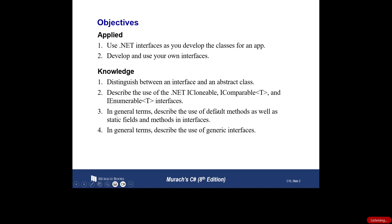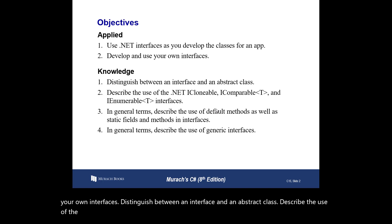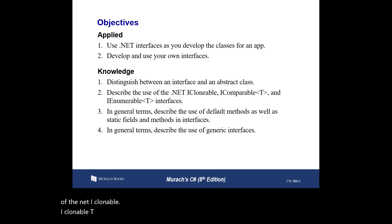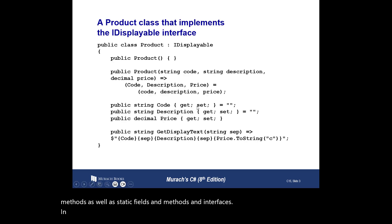Our objectives: use .NET interfaces as you develop classes for an app, develop and use your own interfaces, distinguish between an interface and an abstract class, describe the use of the .NET IClonable, IClonableT, and IEnumerableT interfaces in general terms, describe the use of default methods as well as static fields and methods in interfaces, and describe the use of generic interfaces.